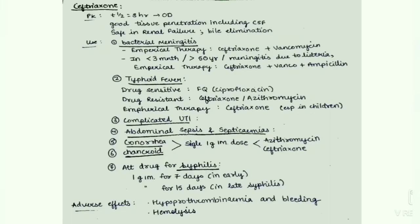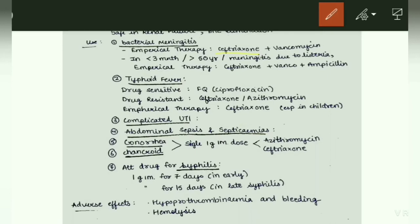Now we will discuss the most important drug — ceftriaxone. You have to remember all lines. Pharmacokinetics: T-half is 8 hours, hence once-daily dosing is given. It has good tissue penetration including the CSF. It is safe in renal failure and has bile elimination. Use: empirical therapy is ceftriaxone and vancomycin. In patients less than 3 months or more than 50 years with meningitis, or due to Listeria, empirical therapy should include ampicillin along with ceftriaxone and vancomycin.